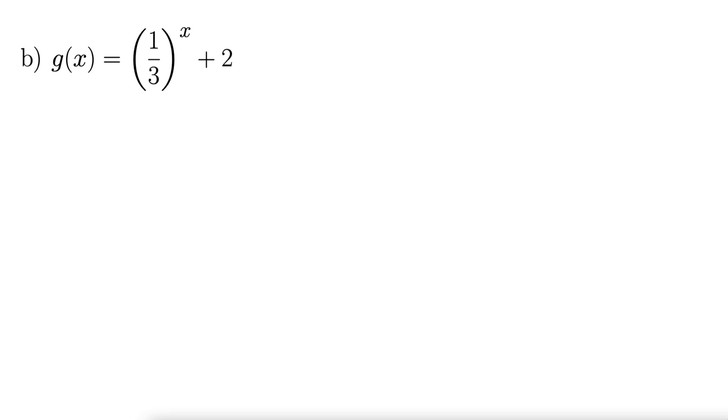Now we want to graph g of x equals 1 third to the x plus 2, which you could also think of this as 3 to the negative x plus 2. It's commonly written that way. But let's start with graphing our base function 1 over b to the x. And this will hold for any base b, including 1 third.